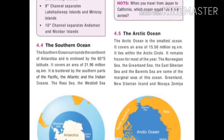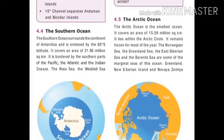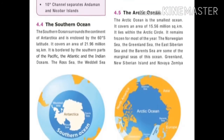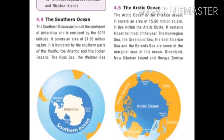The Arctic Ocean is the smallest ocean, covering an area of 15.56 million square kilometers. It lies within the Arctic Circle and remains frozen for most of the year. The Norwegian Sea, Greenland Sea, East Siberian Sea and Barents Sea are some of the marginal seas of this ocean.